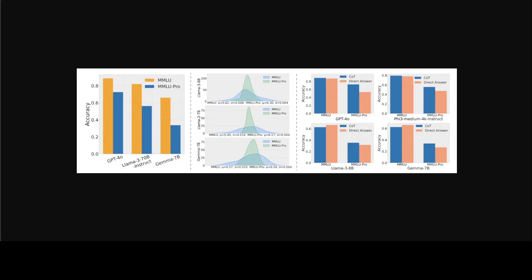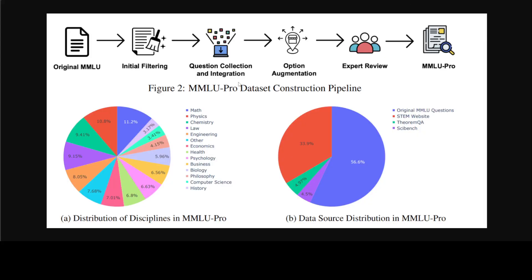This leads us to re-examine the effectiveness of MMLU in measuring future LLMs. Besides the saturation issue, performance on MMLU is also known to be highly sensitive to the prompt and scoring function, which causes significant order changes in the leaderboard. Researchers have identified issues including that the questions in MMLU only have three distractor options, meaning LLMs could exploit shortcuts to derive the answer without truly understanding the rationale, leading to overestimation of true performance. Also, questions are mostly knowledge-driven without requiring much reasoning, and most models achieve better performance with direct answer prediction without chain of thought.